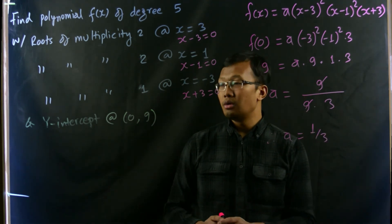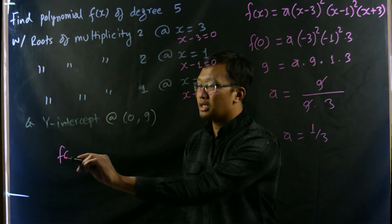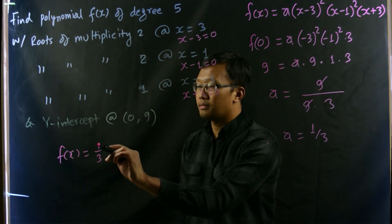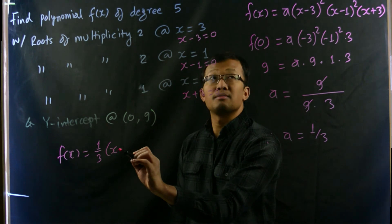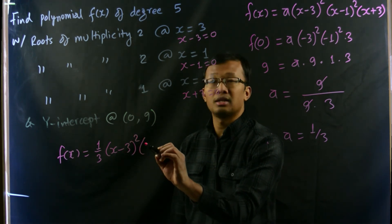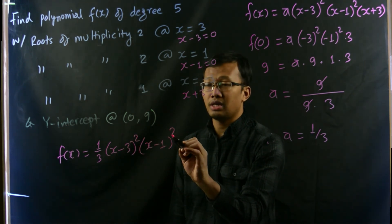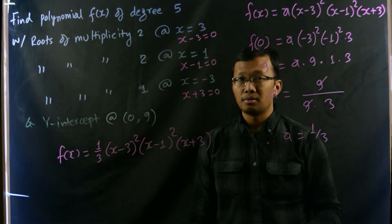Thus our polynomial function is f(x) equals one third times (x minus 3) whole square times (x minus 1) whole square times (x plus 3). So that's our polynomial function.